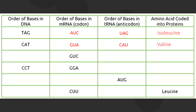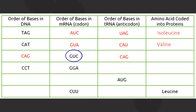For number three, the given is G-U-C. Let's start transcribing. The order of bases in DNA is C-A-G, because G pairs with C, U pairs with A, and C pairs with G — so that gives us C-A-G. For the tRNA, we have C-A-G. And G-U-C codes for valine. You will do the same for the remaining numbers.